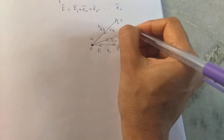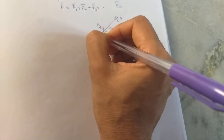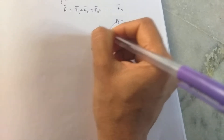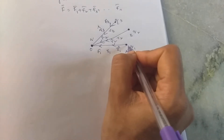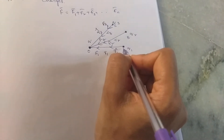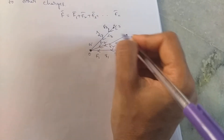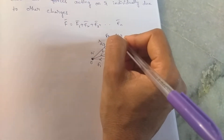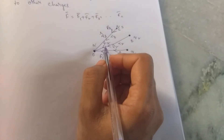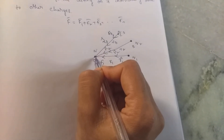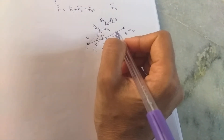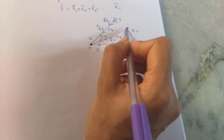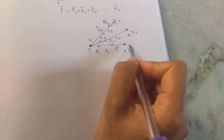Since these are like charges, repulsive forces act in the directions of AO, BO, and CO respectively. F1 is the force acting on charge Q due to Q1, F2 is the force acting on Q due to Q2, and F3 is the force acting on Q due to Q3. Remember, the remaining charges do not affect the force between any pair — F2 and F3 do not affect the force between Q and Q1.